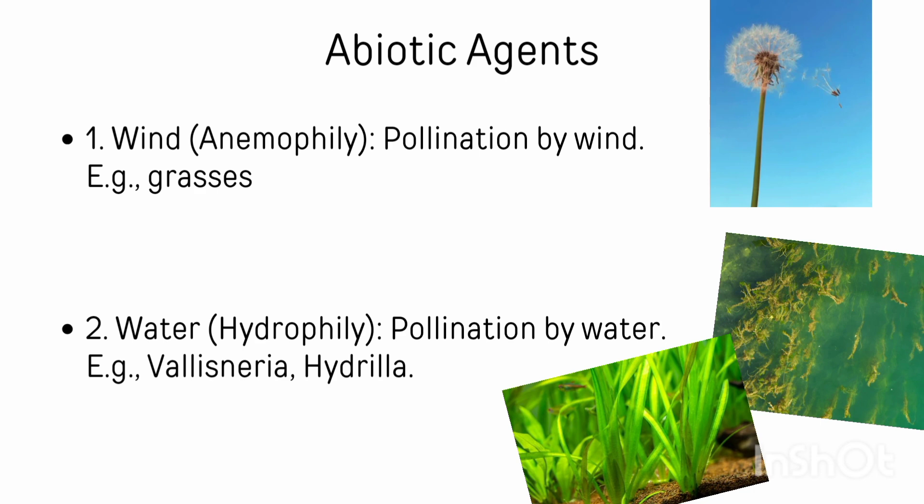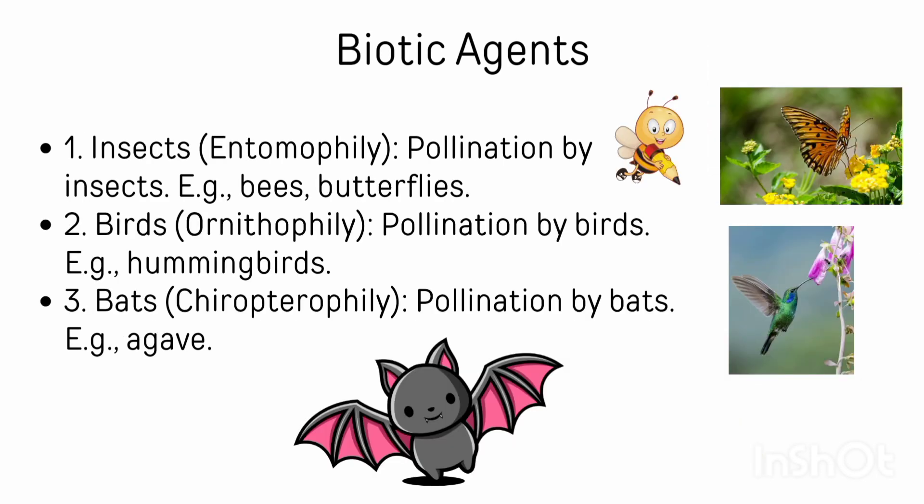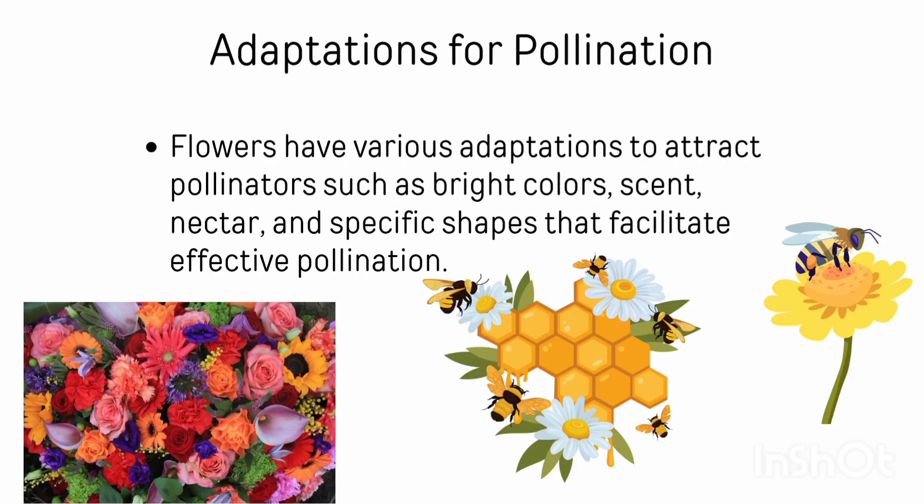Biotic agents include insects, birds, and bats. Pollination by insects is called entomophily — examples are bees and butterflies. Pollination by birds is called ornithophily — example is the hummingbird. Pollination by bats — an example of a bat-pollinated plant is Agave.